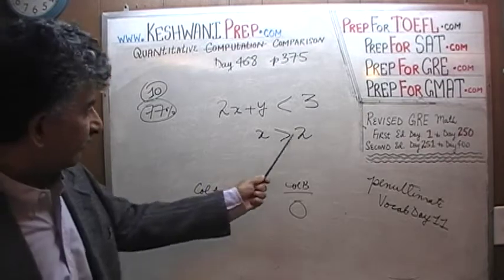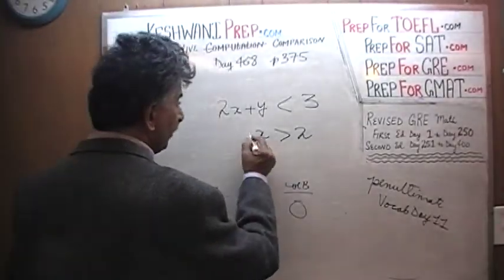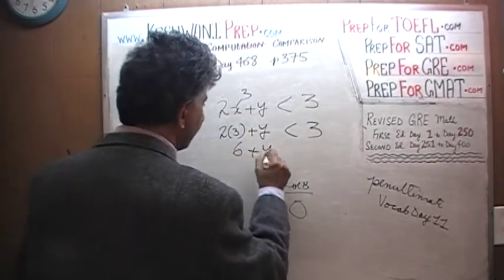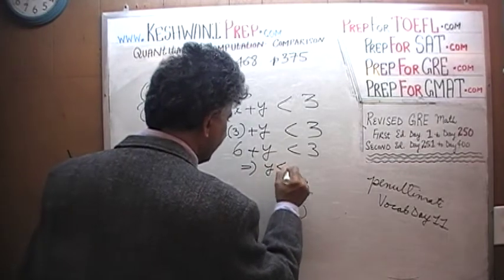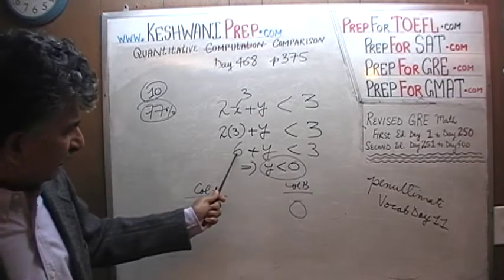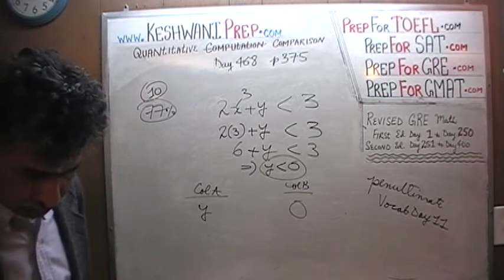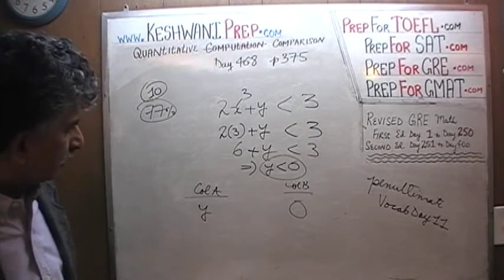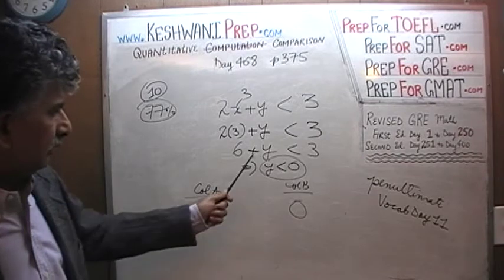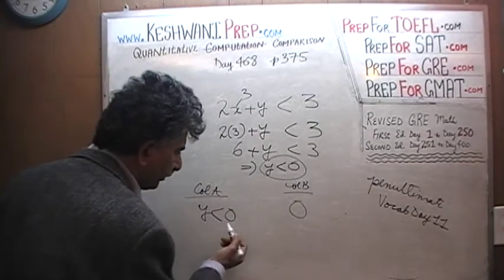Since we are told that x is more than 2 — even though x does not need to be an integer — let us just plug in 3 to keep things simple. If we plug in 3, we find that 2 times 3 plus y is less than 3, so 6 plus y is less than 3. That implies that y has got to be a negative quantity, because we have to subtract something from 6 to bring it below 3. For example, if x equals 3, then y would have to be negative 8 — y must be a negative quantity. Since 0 is more than any negative quantity, the answer is B.